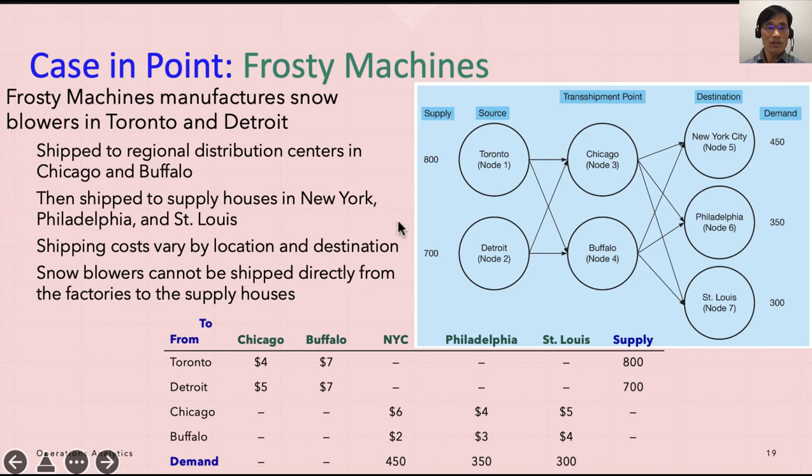And here are the information of the shipping. So, supplies 800, 700, 450, 350, and 300. And from Toronto to Chicago $7, Buffalo $5, and Detroit to Chicago $5, Buffalo $7. And the demand is 450, 350, 300. And I put it right here. And supply is 800 and 700 for Toronto and Detroit.